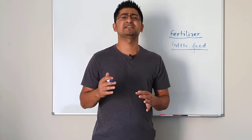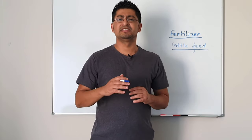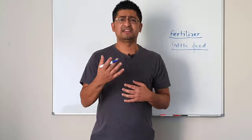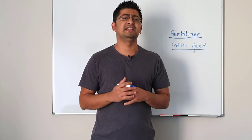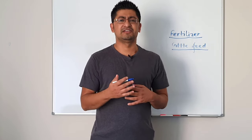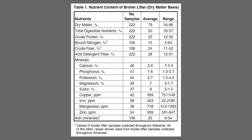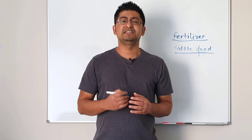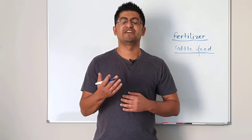What you have to do is deep stack it. When you do deep stacking, the temperature of the broiler litter rises to almost 140 to 150 degrees Celsius, which will easily kill salmonella and other bacteria. So it has to be processed nicely to kill all the bacteria. Looking at this table, broiler litter has an average crude protein of 23% (range 12–35%), crude fiber average 24% (range 11–52%), calcium 2.9% average (range 0.7–5.3%), and ash 25% average (range 9–54%). So it is a really good source of protein, fiber, and minerals.